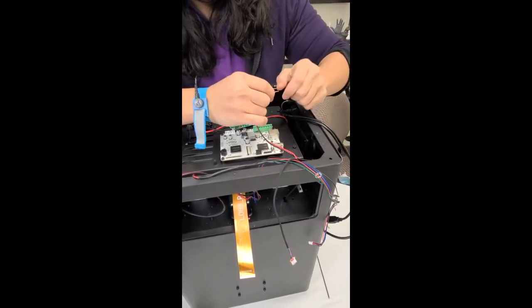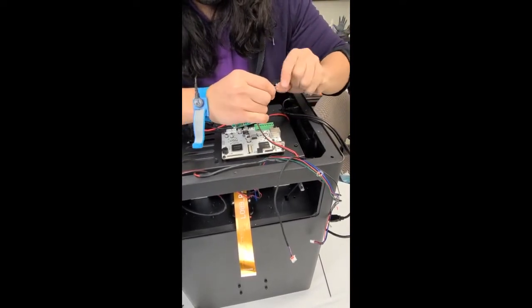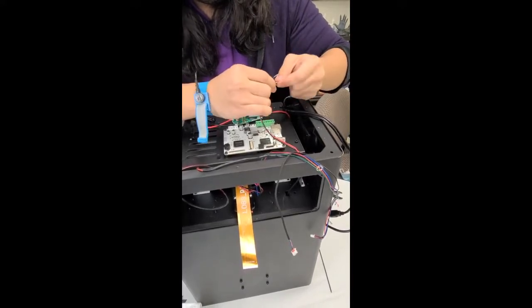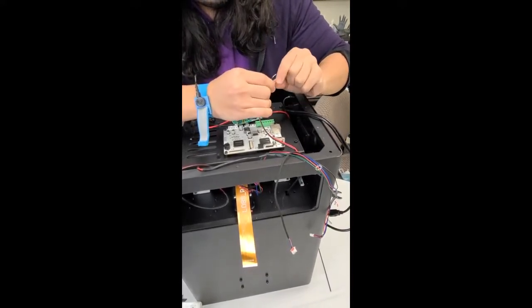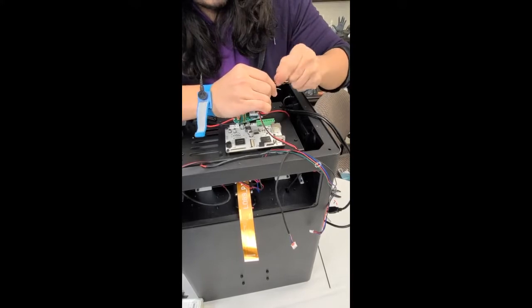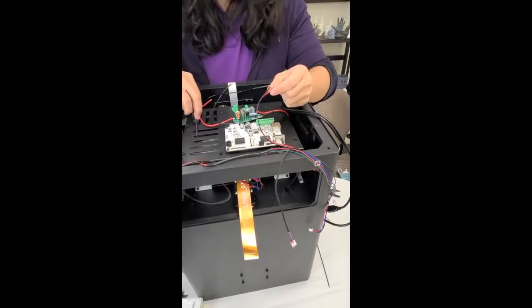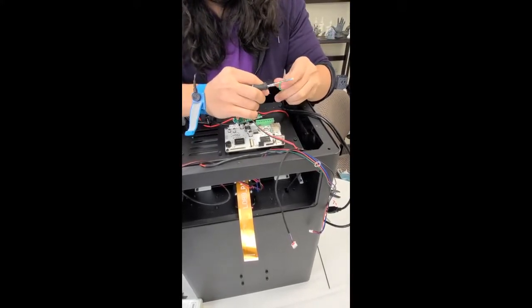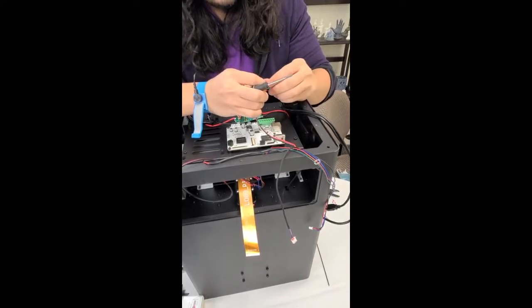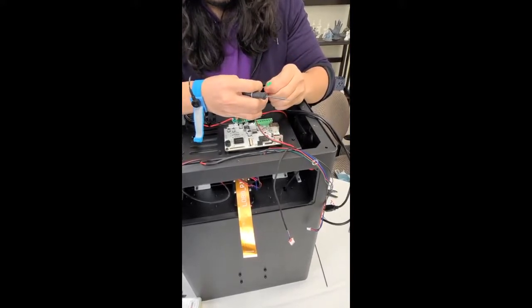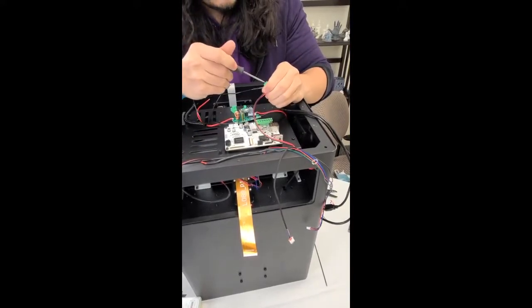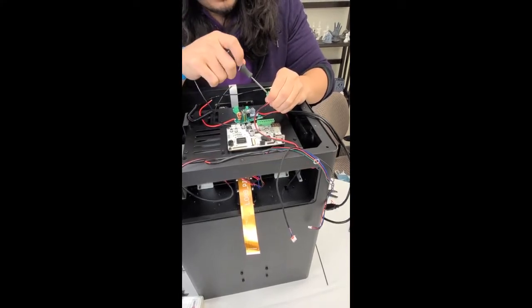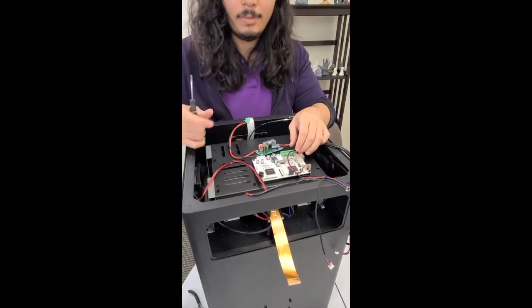First we got to make sure we twist the wires up. Don't want any fraying. Take our flathead, insert this, and I'm just going to tighten this down on top of it. And now we can connect everything to the mainboard.